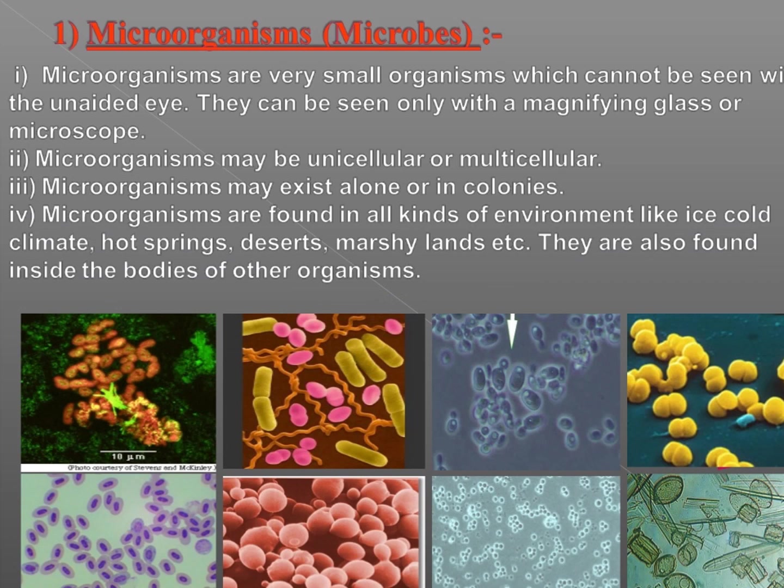Microorganisms, or microbes — as the name suggests, they are very small organisms which cannot be seen with the unaided eye. We have to take help of a magnifying glass or compound microscope to see the structure of microorganisms. Certain characteristics of microorganisms: they can be unicellular or multicellular. Some microorganisms exist alone or in colonies, that is, in groups. Microorganisms are found in all kinds of environments.